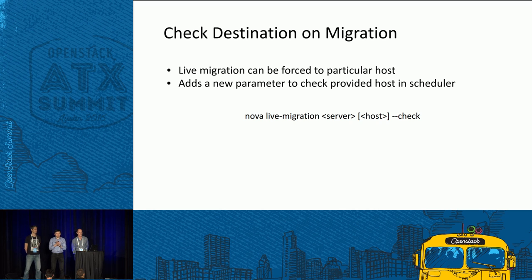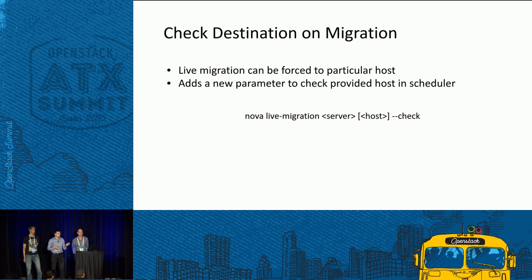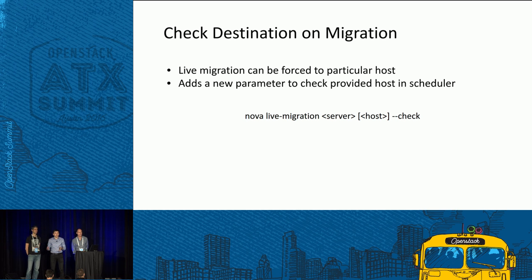We are also working on tracked-destination migration. Currently, if you trigger live migration to a particular host, the scheduling phase is skipped, which might break affinity or anti-affinity policies. This feature will provide a new API flag called 'check' — you can still specify a destination host, but Nova will pass it through the scheduler to validate that it won't break affinity policies or server group constraints. If it would, the scheduler will refuse the live migration.